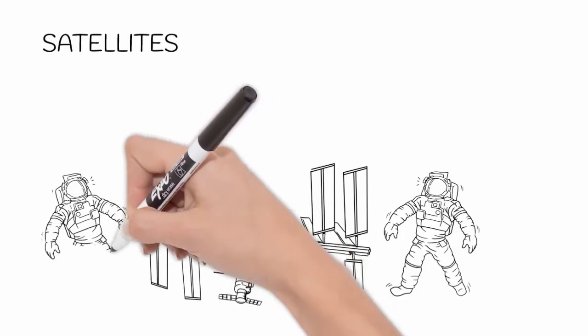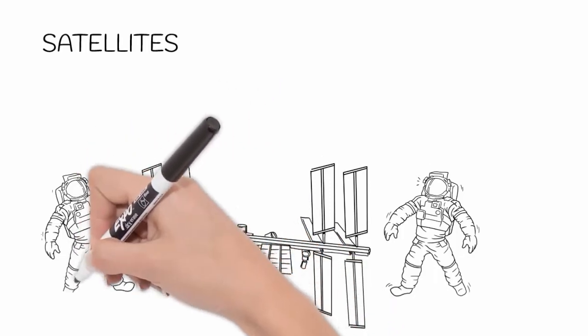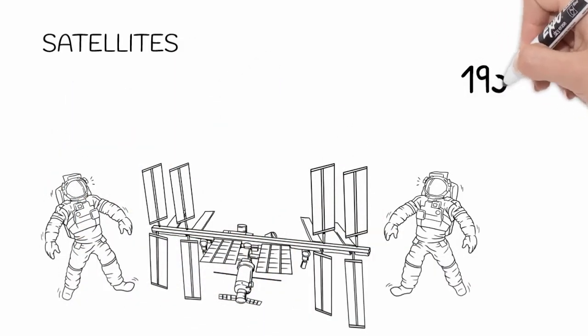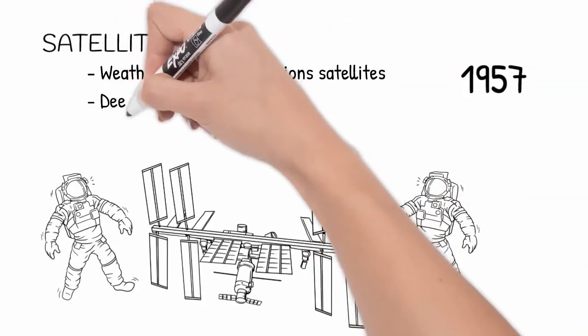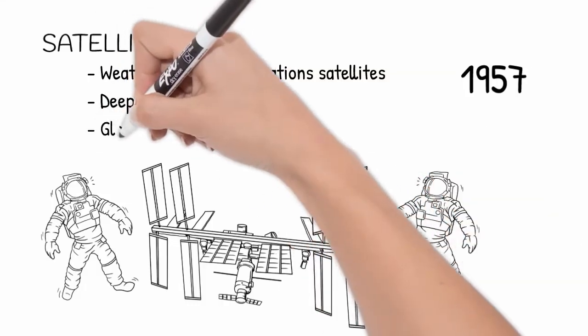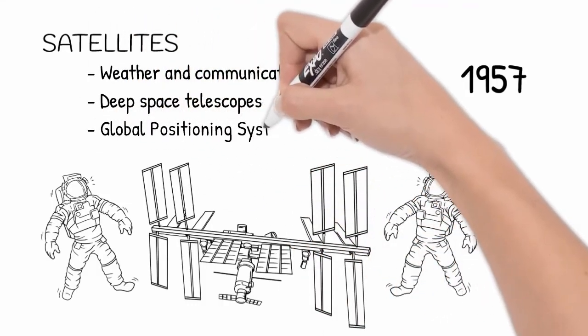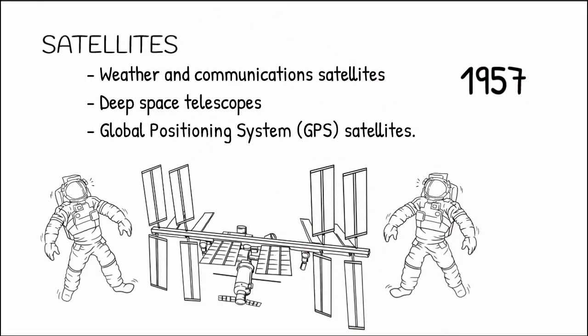There are three main types of satellites. The first are ones sent up to monitor weather and help our communication services. The second are deep space telescopes - these use the technology of telescopes but are sent out into space into orbit so they can get even more magnified images of our solar system and deeper space. The third type are GPS satellites - Global Positioning System satellites.